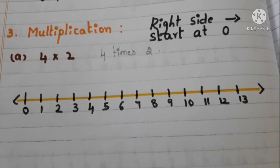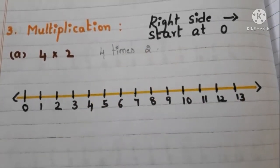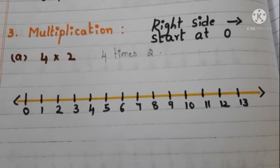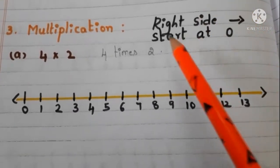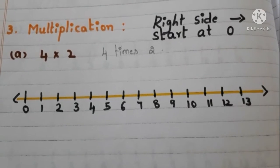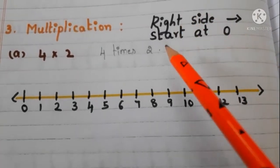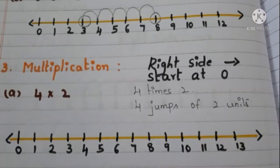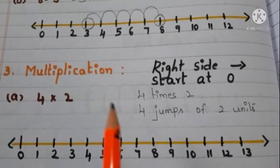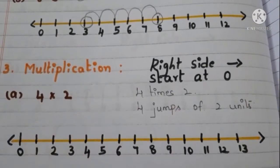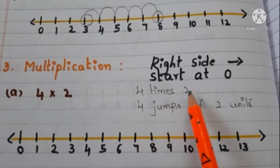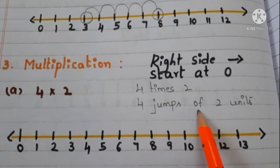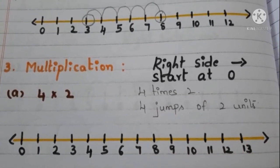Now let us see how to multiply two numbers by using a number line. Multiplication means repeated addition, so we have to move to the right side on the number line, but we have to start at 0. Let us see with the example: 4 into 2 means 4 times 2, so we have to make 4 jumps of 2 units.